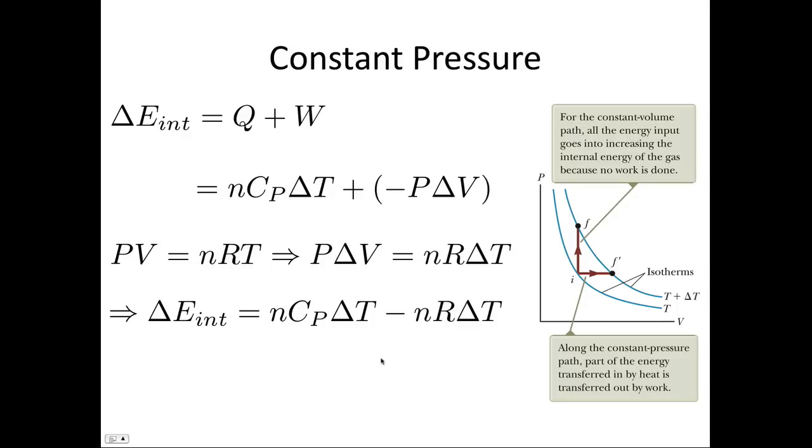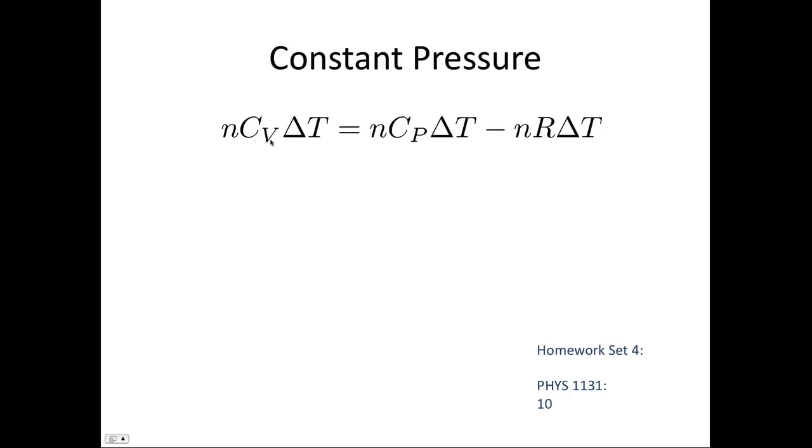And now remember that we said that the change in internal energy didn't matter which path we took. So this change in internal energy is the same as the change in internal energy when going from I to F or the constant volume case. So this is equal to nCv delta T. So now what we can do is solve these two equations simultaneously, as they're both equal to the change in internal energy.